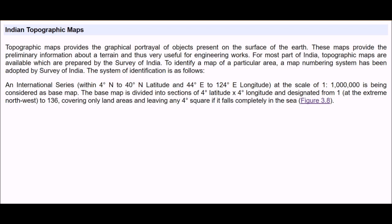The system of identification is like this: first we have an international series which is within 4 degree north to 40 degree north latitude. I will show you the diagram just now. The international series between 4 degree north to 40 degree north latitude and 44 degree east to 124 degree east longitude, and the scale is 1 is to 10 to the power 6.